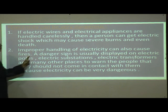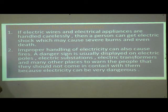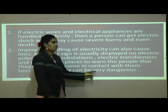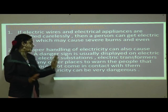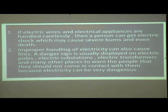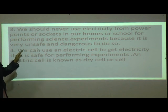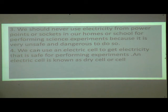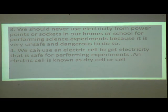A danger sign is usually displayed on electric poles, electric substations, electric transformers, and many other places to warn people not to come in contact with them. We should never use electricity from power points or sockets in our homes or school for performing science experiments, because it is very unsafe and dangerous.